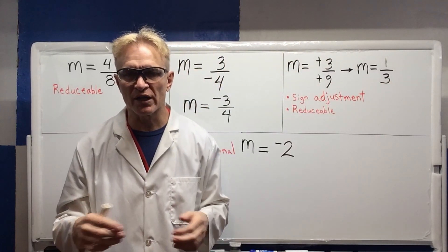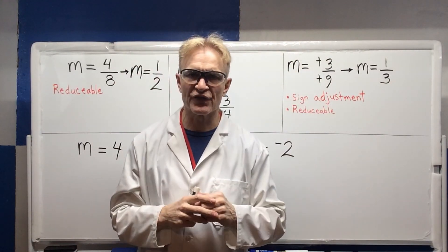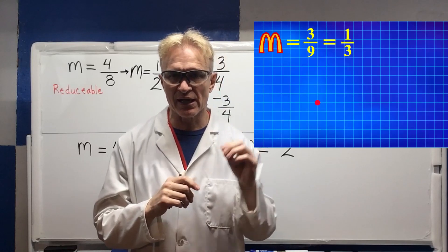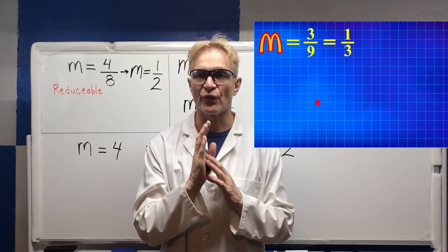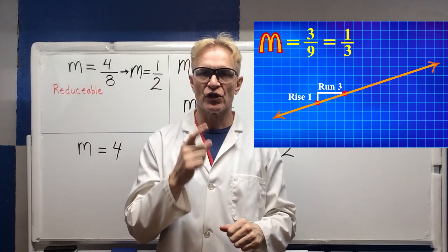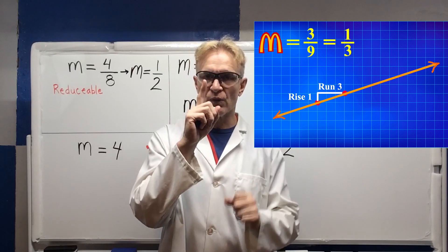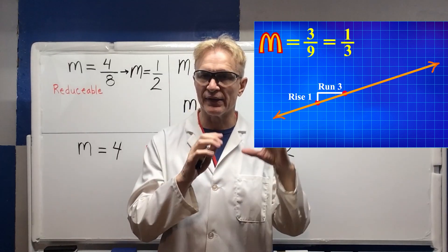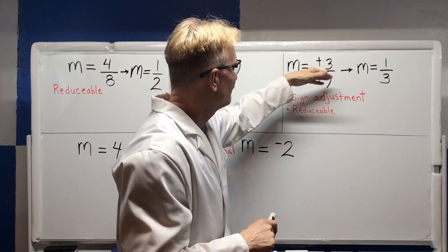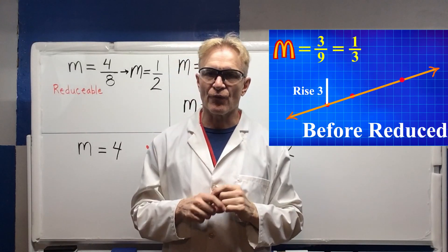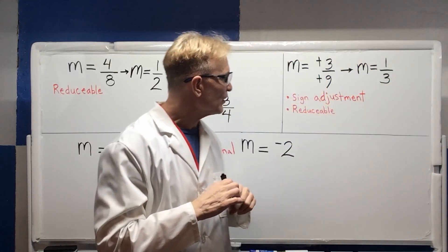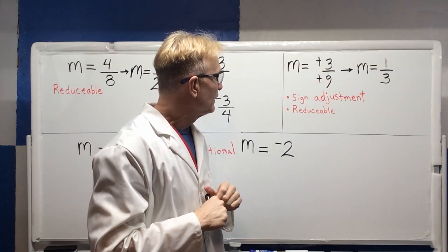Now we can look at that geometrically. We know it's positive, so it's a positive slope. Since the top number is positive, we're going to move vertically upward — rise one, then run three to the right. If I start at one point and rise one and run three, I'll land on the second point on the line. So M equals one-third — this was a sign adjustment and reducible.